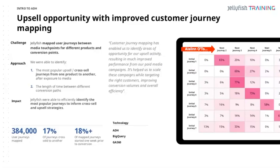That is insightful — we can understand the interplay, the upsell opportunity, and where spending on one product might have implications on sales for another. 18% of mapped journeys started one week prior to conversion. The difference versus GMP and Campaign Manager is that in Campaign Manager we are limited in path-to-conversion measurement and cannot combine or stitch together multiple paths to conversion — which is why we needed to do this in Ads Data Hub.